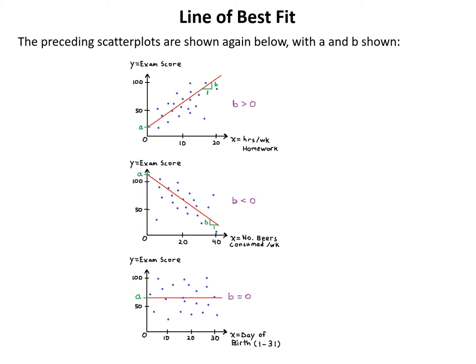In all cases the y-intercepts (a values) are greater than zero. In the top graph b is greater than zero, giving a positive slope going up to the right. In the middle graph b is less than zero, giving a negative slope going down to the right. The bottom graph has a line of best fit going through the points horizontally, so b equals zero, meaning the slope is zero.